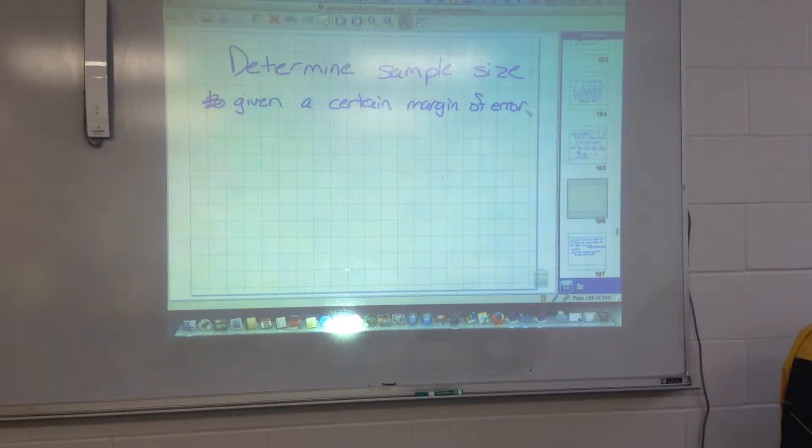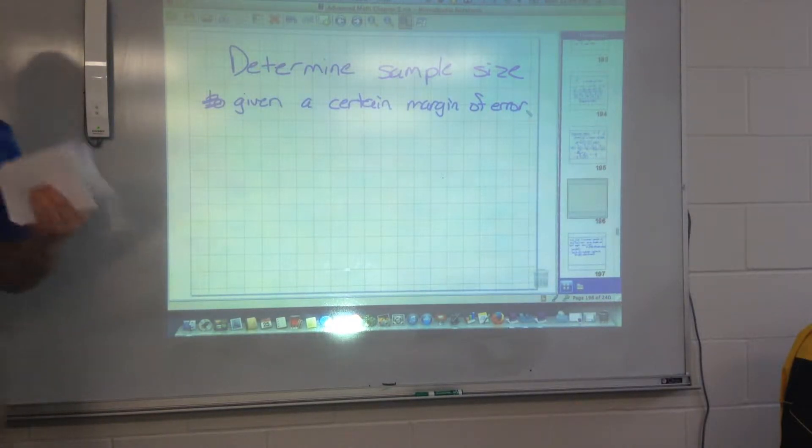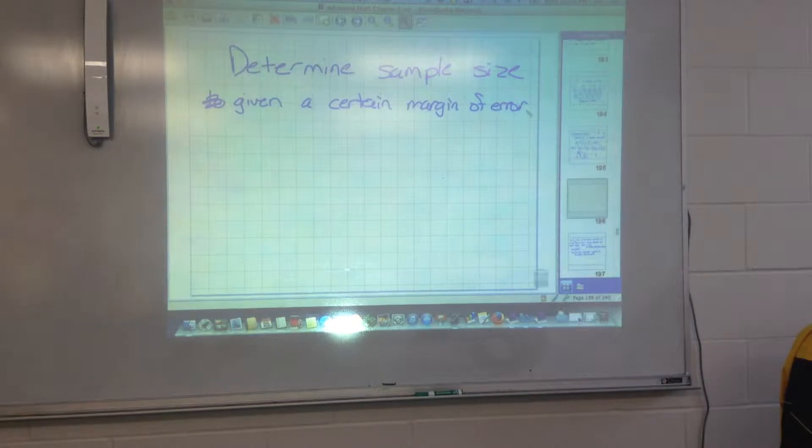So let's say you're going to conduct a poll and you know that you want to be 95% confident on an interval you come up with, and you want your margin of error to be less than plus or minus 3%. Well, in order to make that happen, you're going to need a certain size of sample. There's going to have to be some certain size of sample that you're going to use, so mathematically you can be within that 3%, plus or minus 0.03.